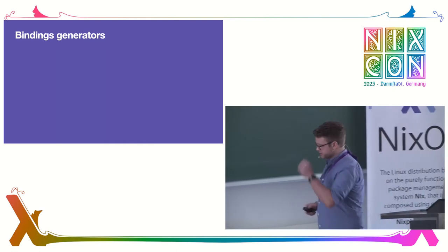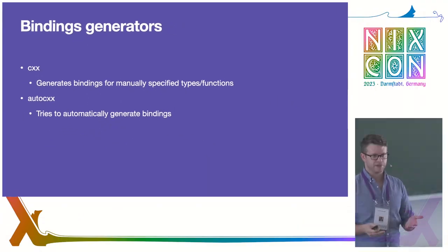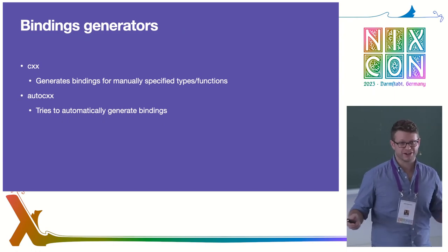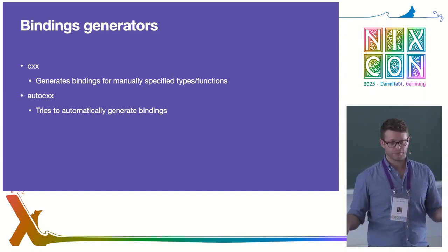Let's talk about a few bindings generators in the Rust ecosystem. The first is called CXX — a Rust crate that generates C++ bindings for types you specify manually. You tell it which data types and functions you want, and it generates Rust equivalents. The next is AutoCXX, a wrapper around CXX that's more useful for larger projects. With CXX, if you want a function or two you write something manually. If you want to bind to something large like all of Chromium, you tell AutoCXX an entire namespace and you get bindings for that entire namespace.